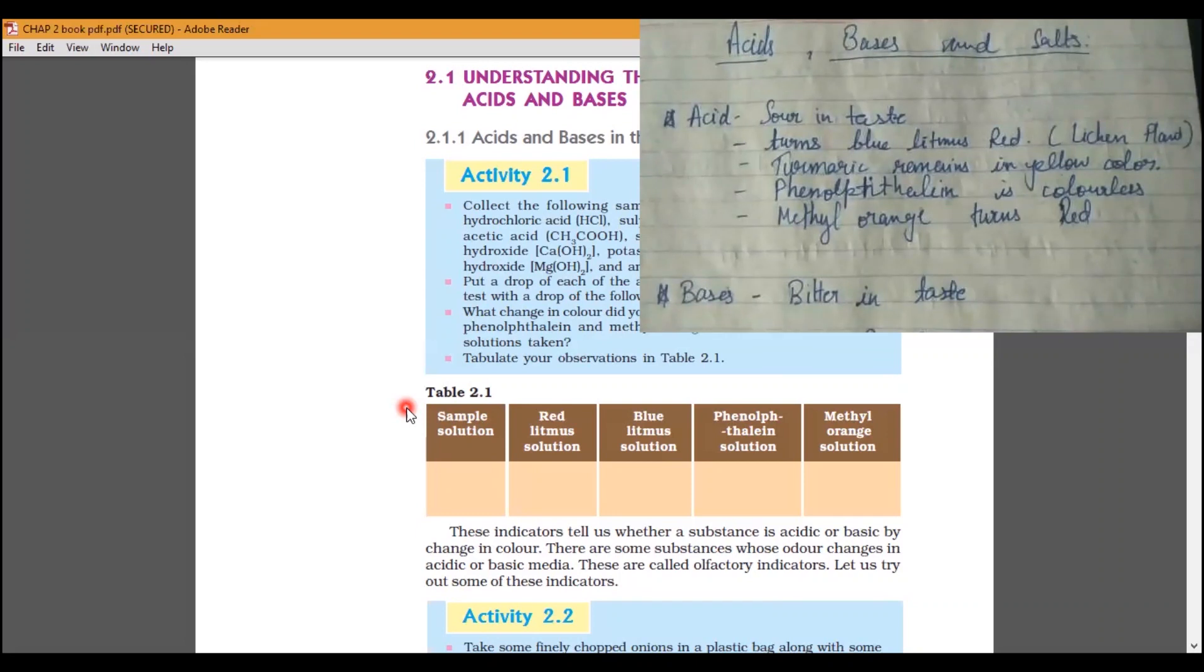Phenophthalene is colorless. If we add acid, it will be colorless. Methyl orange is orange and red. Methyl orange is red. It will change in red color. So, we have this indication that it is a substance acid.